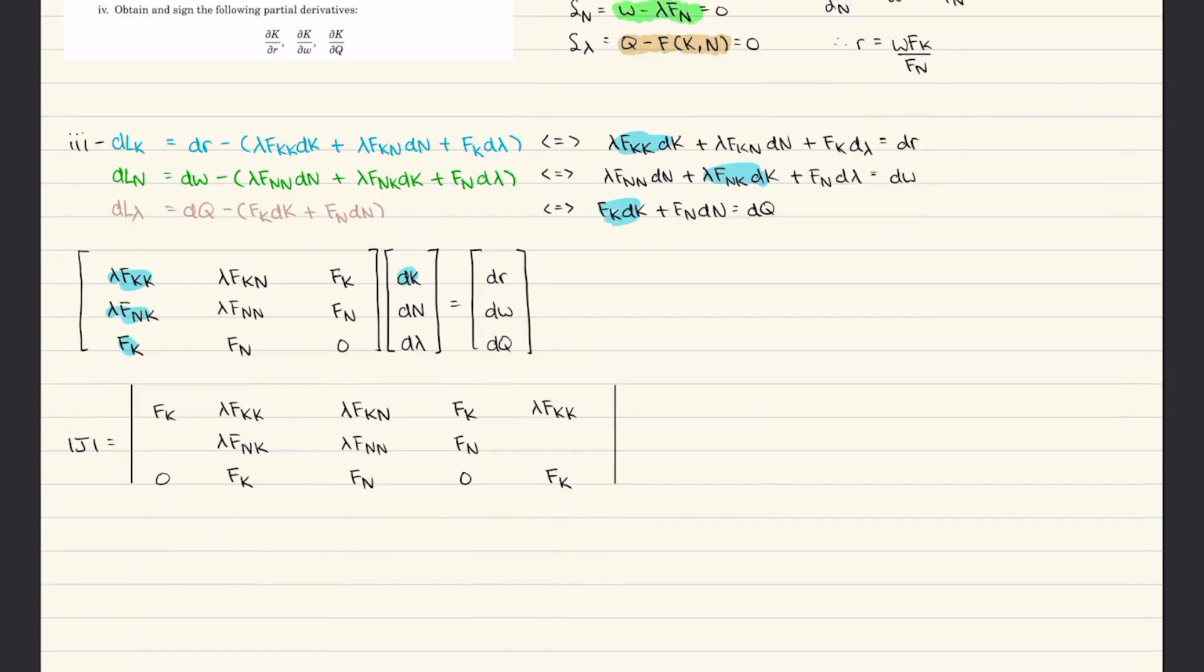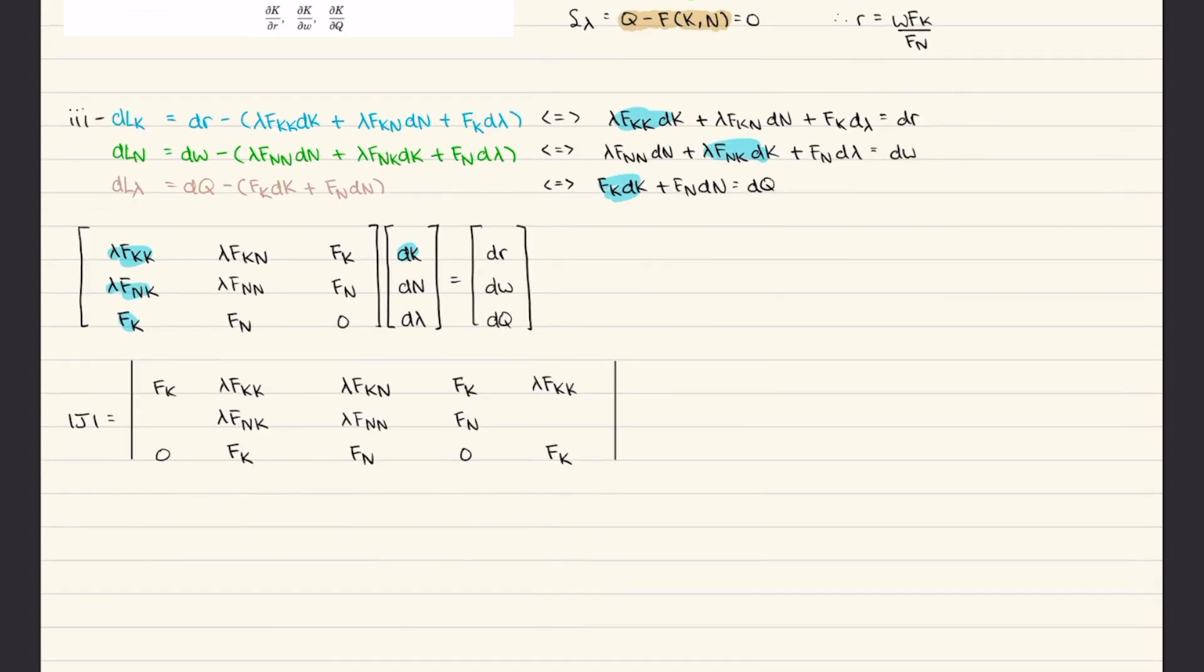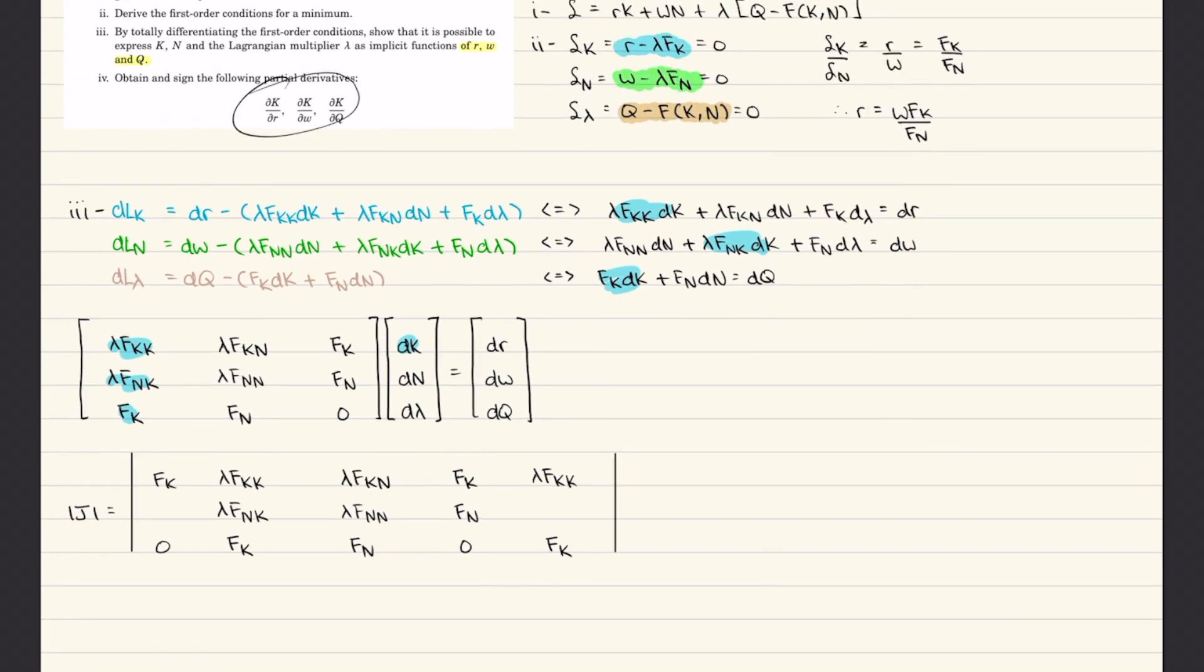After you've done that, you find the determinant for the matrix. I've quickly written it out here. I don't use class expansion for three by three because it's too complicated. You find the determinant for the Jacobian and then you can use Kramer's rule to basically solve the partial derivatives, which is what part four wants. I'm just going to find the Jacobian real quick.